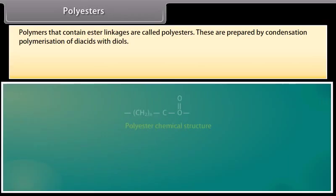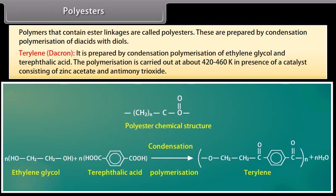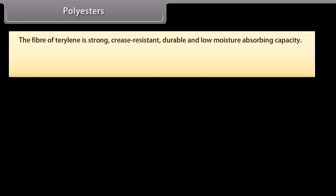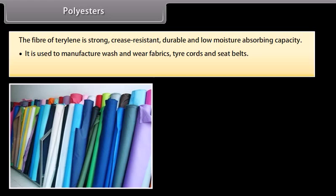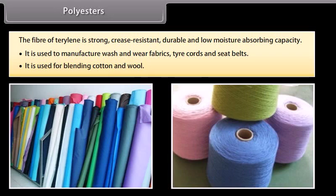Polyesters are polymers that contain ester linkages, prepared by condensation polymerization of diacids with diols. Terylene (Dacron) is prepared by condensation polymerization of ethylene glycol and terephthalic acid at about 420–460 K in presence of a catalyst consisting of zinc acetate and antimony trioxide. The fiber of terylene is strong, crease resistant, durable and has low moisture absorbing capacity. It is used to manufacture wash-and-wear fabrics, tire cords and seat belts, and for blending with cotton and wool to increase resistance to wrinkles and wear and tear.